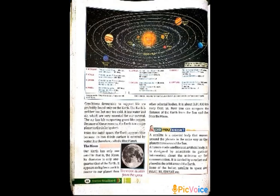When we see the Earth from outer space, it appears blue because its two-thirds surface — about 71% — is covered by water. That is why the Earth is also called the blue planet.